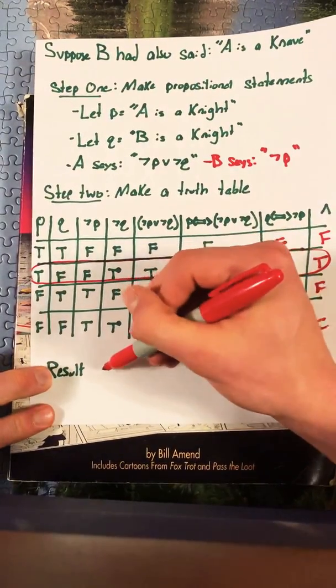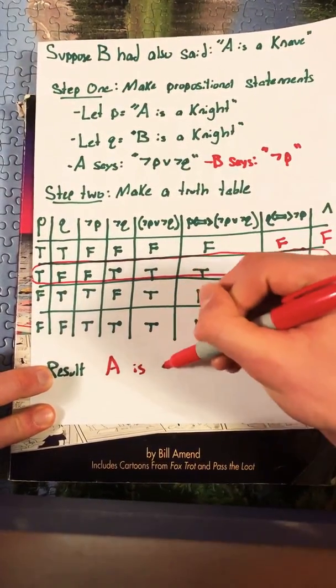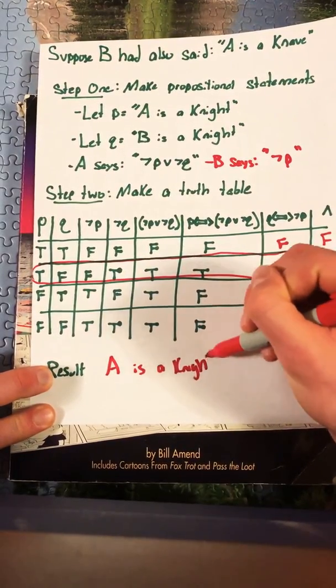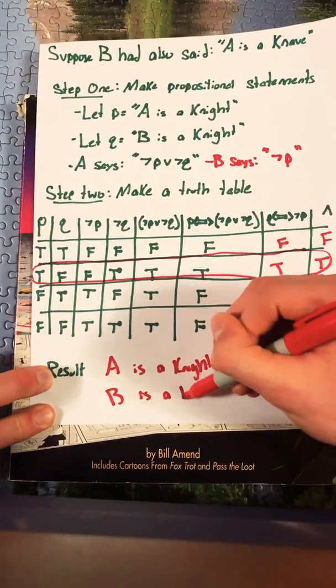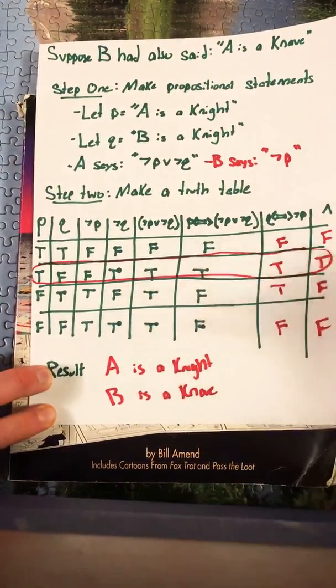So we see that A is a knight and B is a knave. Which makes sense because we're working off of the same problem.